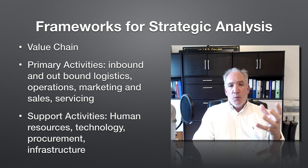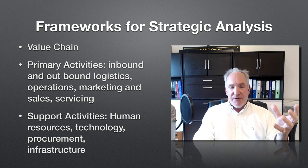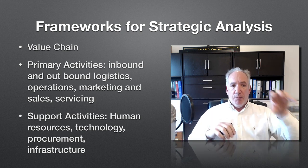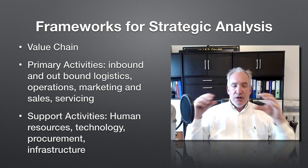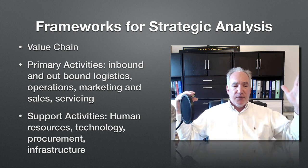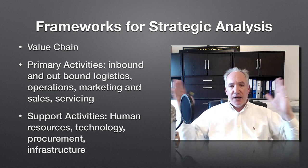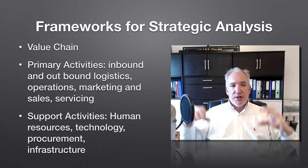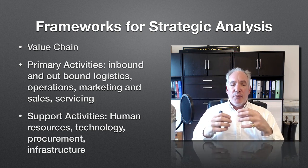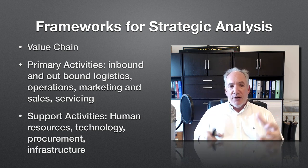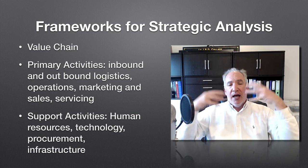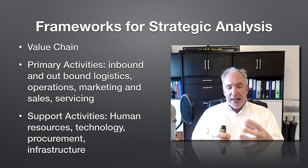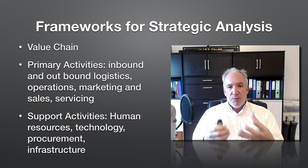Value chain is where you look at the primary activities of a business horizontally — inbound and outbound logistics, operations, marketing and sales, and servicing. You're looking at the value added from raw materials coming into the firm and seeing where you can get efficiencies and cost savings to make internal processes more efficient. Underneath that, you have the support activities: human resources, technology, procurement and infrastructure, which help the main value chain to operate.